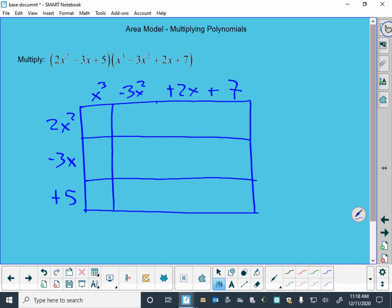In this box up here, 2x² times x³ gives us 2x⁵. Two times negative three is negative six. We got x² times x² - that's x⁴. Two times two is four.